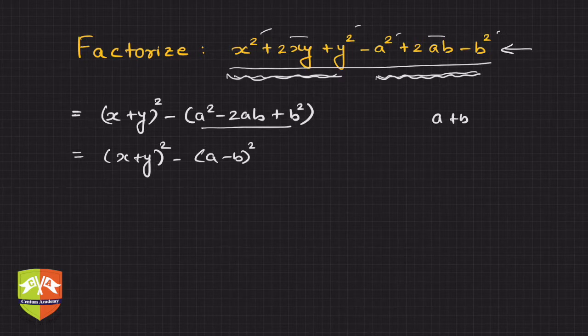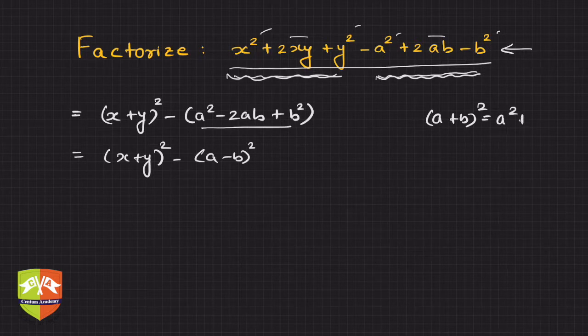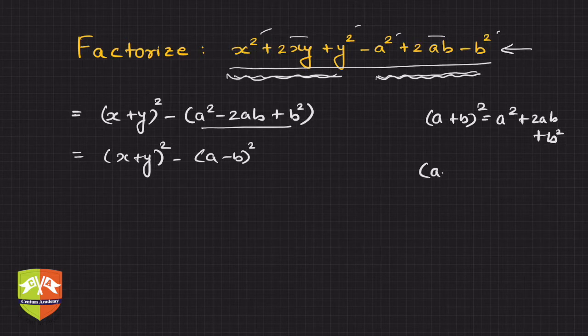So the algebraic identities we are using here are: (a + b)² = a² + 2ab + b², and another one is (a - b)² = a² - 2ab + b².